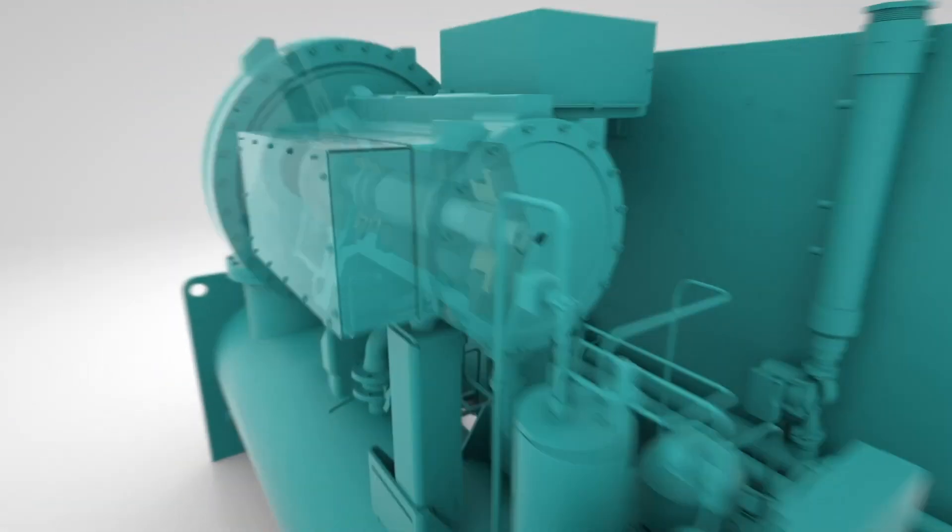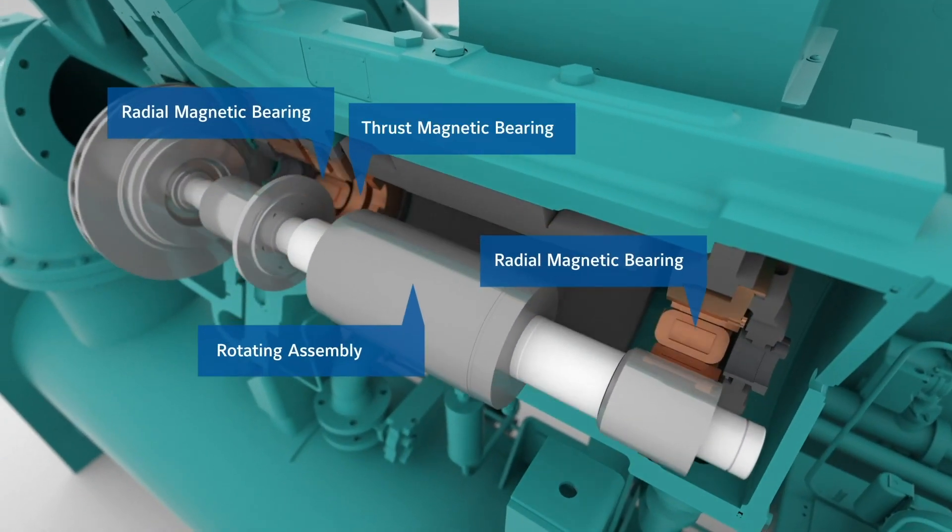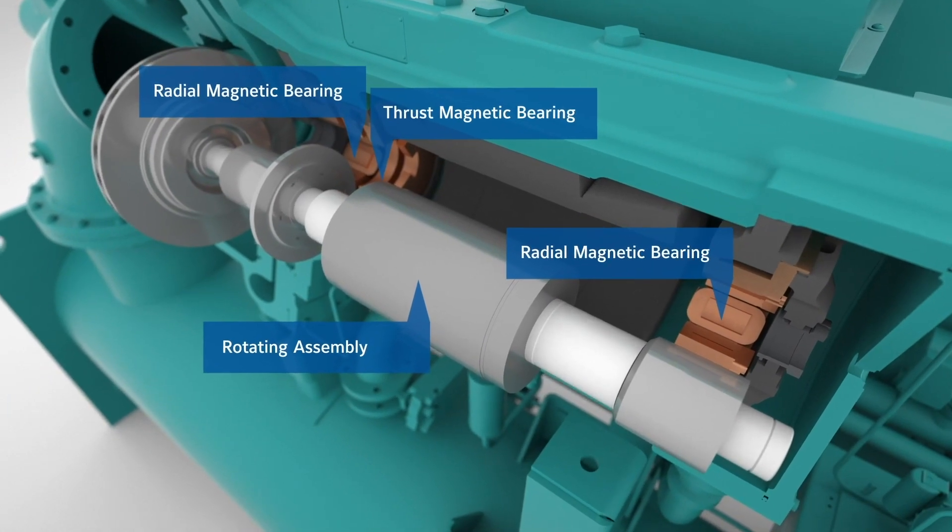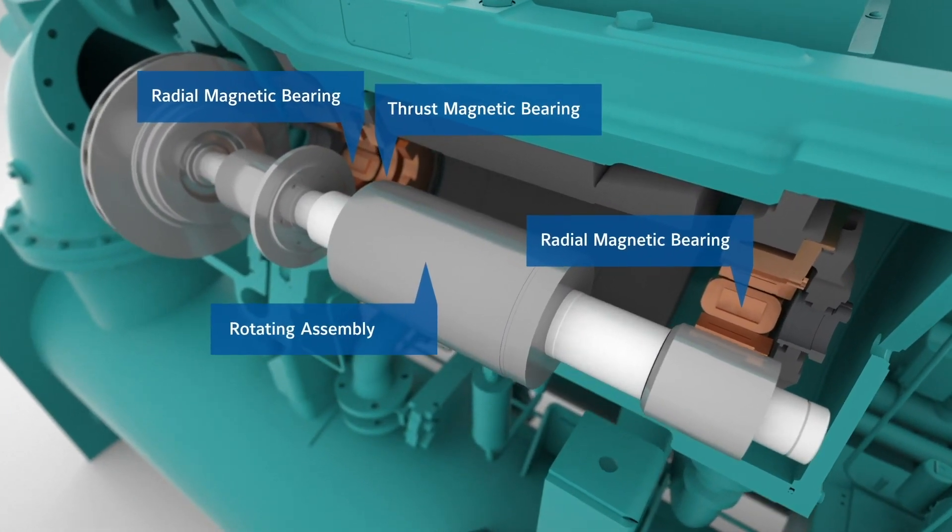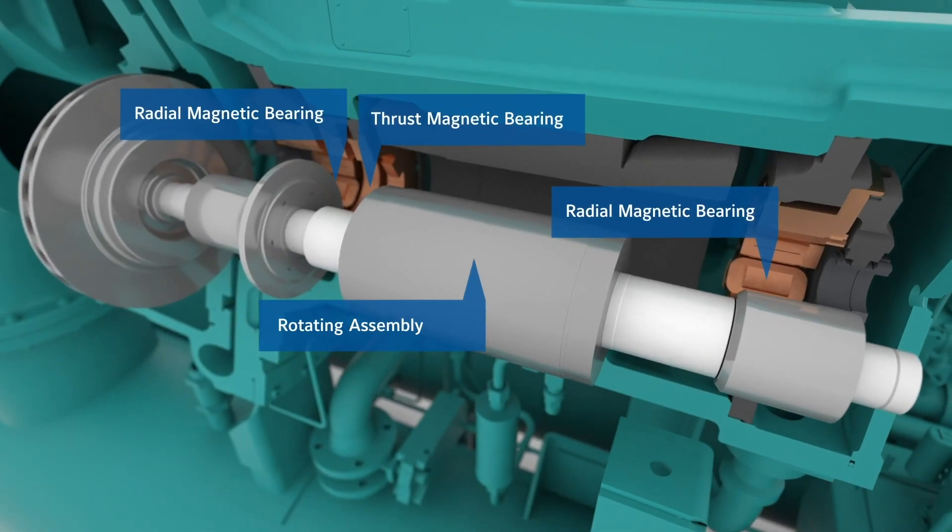The magnetic bearing controller is giving commands to the radial and thrust magnet bearings to ensure proper position. The controller can sense the position of the rotating assembly down to one one-thousandth of a mil. One mil is slightly less than the thickness of a human hair.